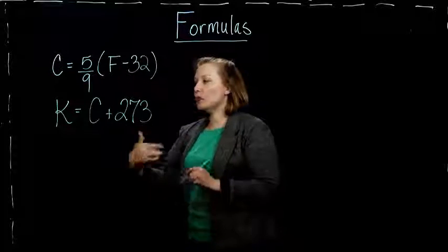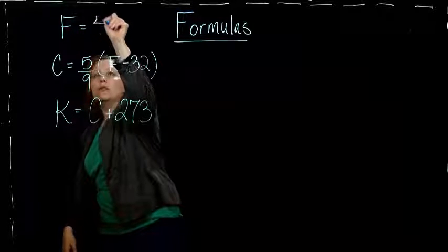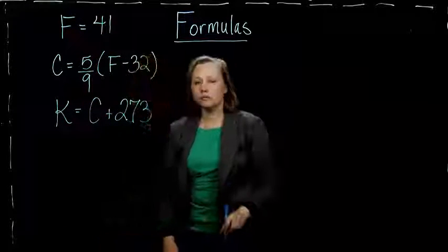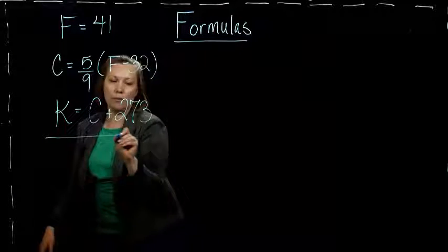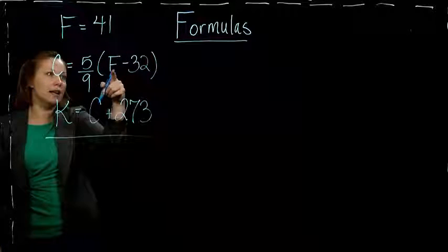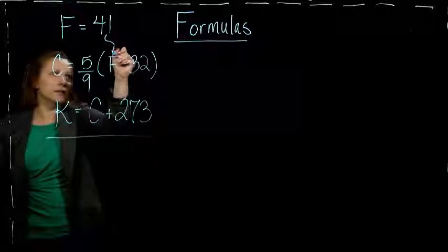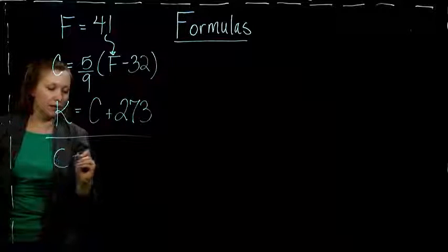So suppose we measured a Fahrenheit temperature of 41 degrees and we wanted to find the Kelvins. So what we do, we would take the 41 and put it into our first formula for our F to get the Celsius temperature.